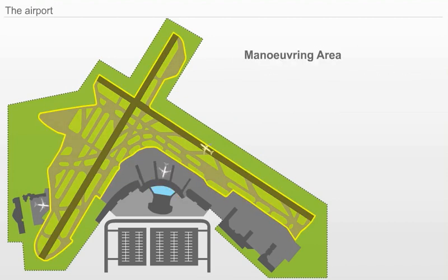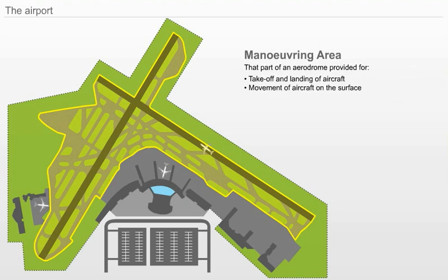Maneuvering Area. That part of an aerodrome provided for the takeoff and landing of aircraft and for the movement of aircraft on the surface, excluding the apron and any part of the aerodrome provided for the maintenance of aircraft.